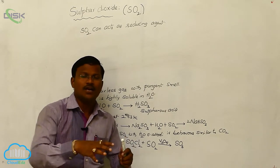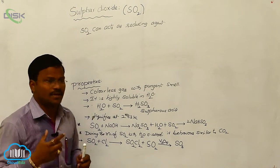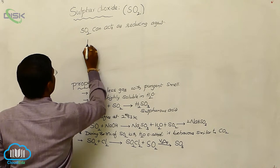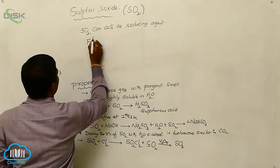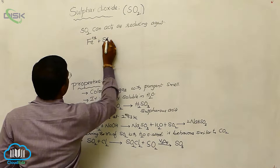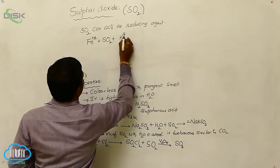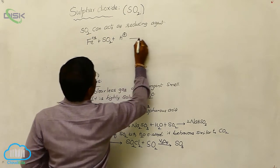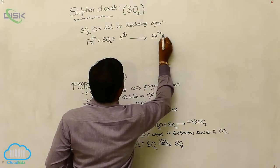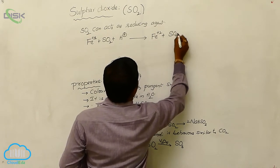During the reaction with permanganate, its color disappears. The chemical reaction is: Fe³⁺ + SO₂ + H⁺ gives rise to Fe²⁺ + SO₄²⁻.